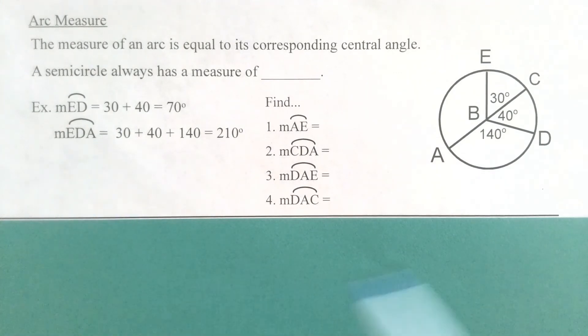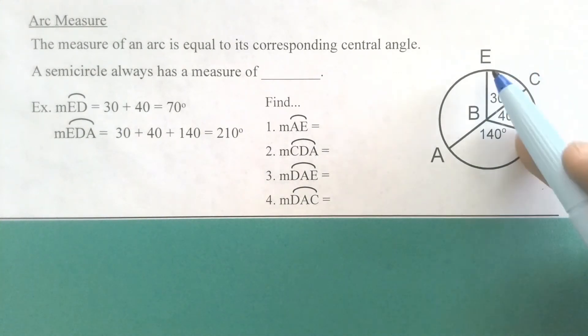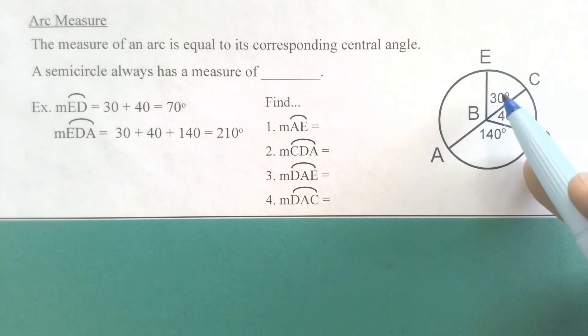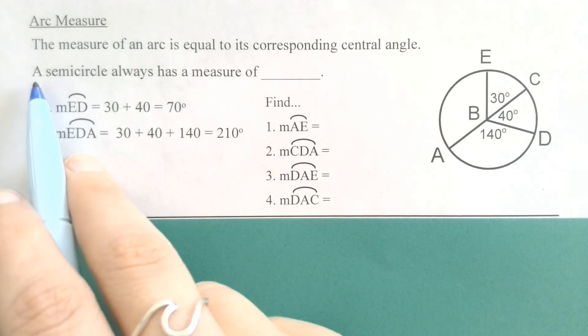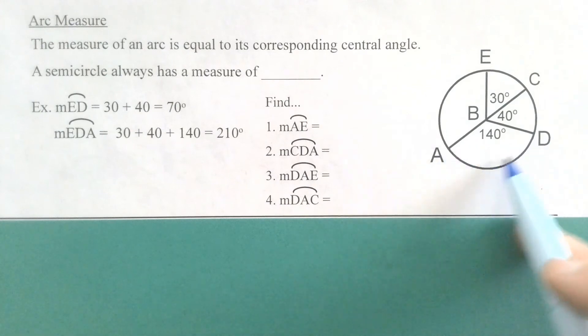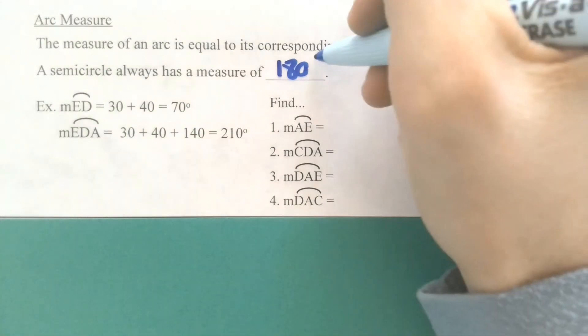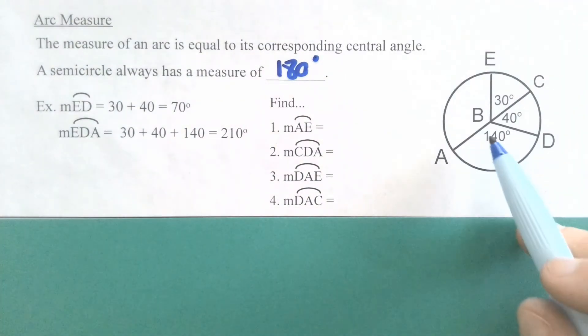Same thing for arc EDA. Making sure that we're following those letters in order. Here's arc EDA. And again, I would just have to add all of those measures together for the central angles, 30, 40, and 140 to get 210. We also know from this that a semicircle, since it is exactly half of a circle, it is always going to have a measure of 180 degrees, because its corresponding central angle is always going to be a straight angle. So if that straight angle is 180 degrees, the measure of the arc is 180 degrees.